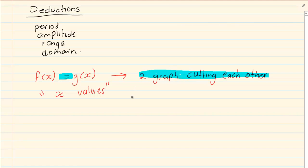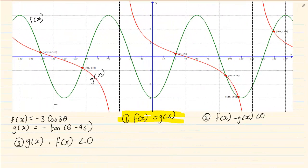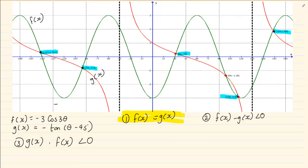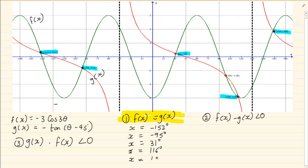These values are very specific — it's not running from one area to another. Where are the two graphs cutting? They are cutting at minus 152 degrees, minus 95 degrees, 31 degrees, 116 degrees, and 164 degrees. So when they are asking you where is f of x equal to g of x, the answer is very specific: x = −152°, x = −95°, x = 31°, x = 116°, x = 164°.